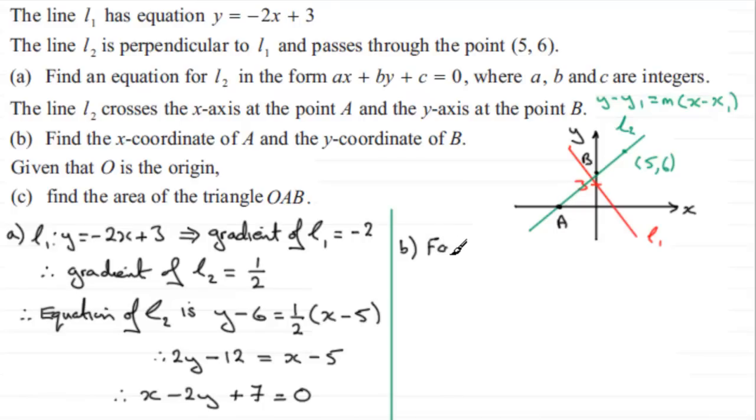So how do I get A first of all? Well, for A, that is where y equals 0. So when y equals 0, we substitute that into our equation for the line L2. So that is going to be this equation here. And when y equals 0, you're just going to have x plus 7 equals 0. So it follows that x plus 7 equals 0. And if I subtract 7 from both sides, we therefore have x equals minus 7. So we've got the x-coordinate for A.